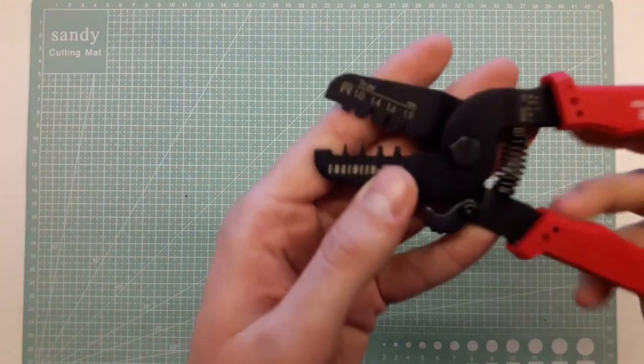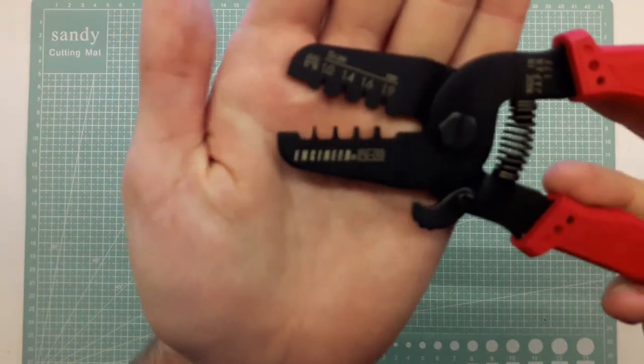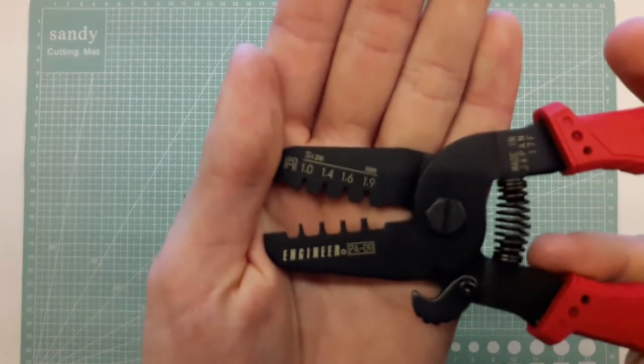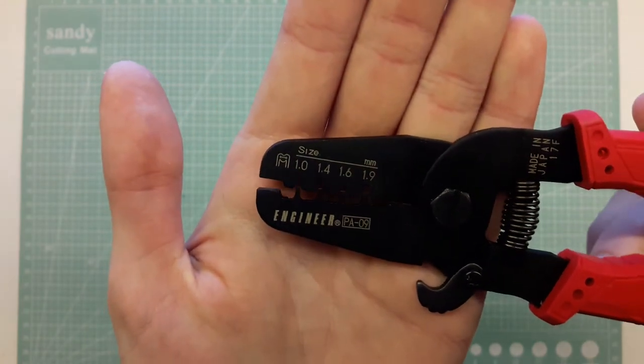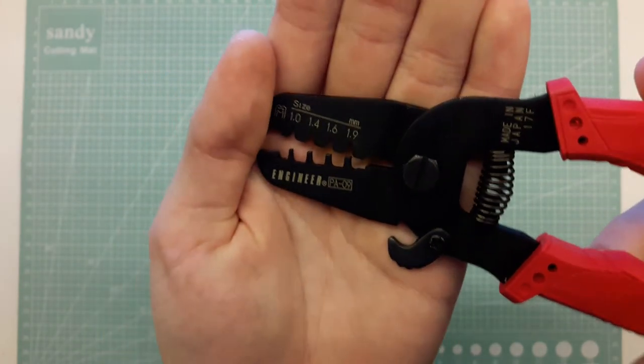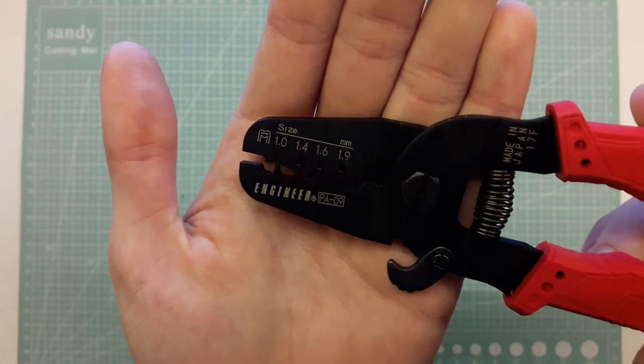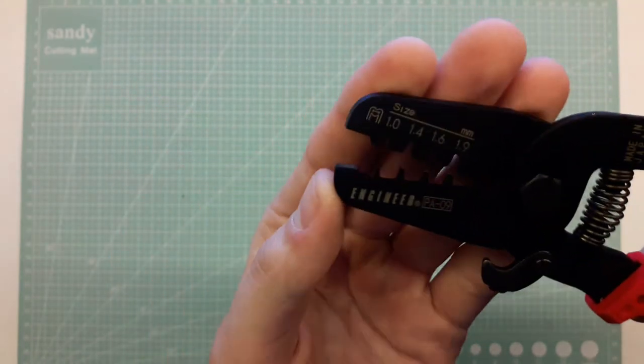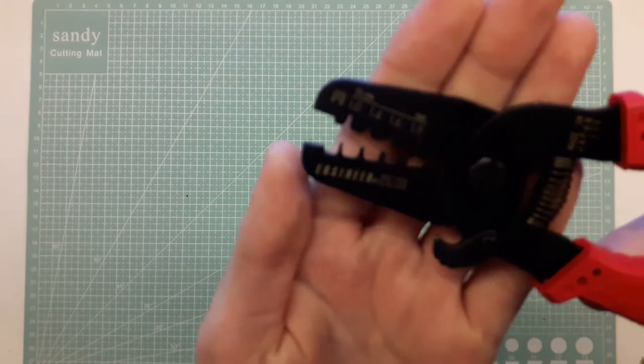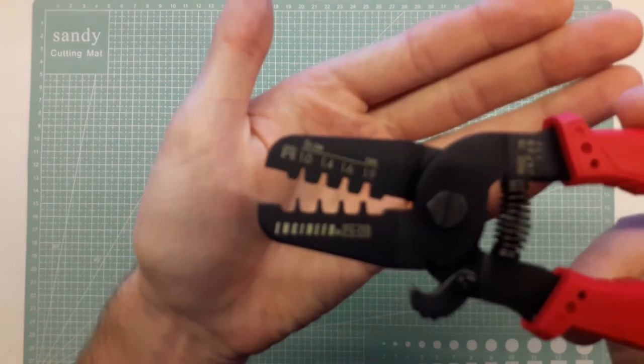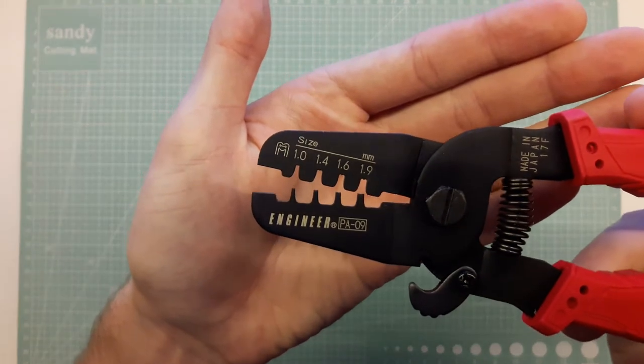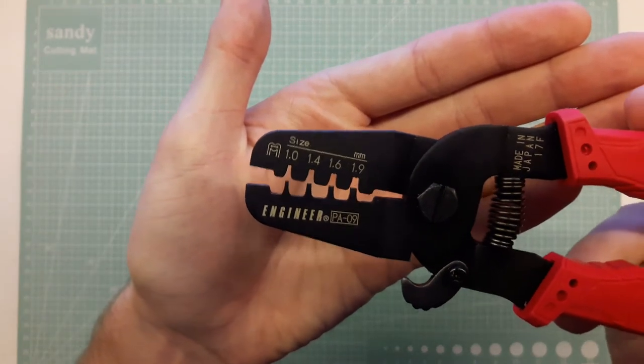So if we have a look you have different sizes that it complies to from one millimeter to 1.9 and you also have a flat piece here at the end. Trying to get the camera to focus. A flat piece at the end to straighten out.